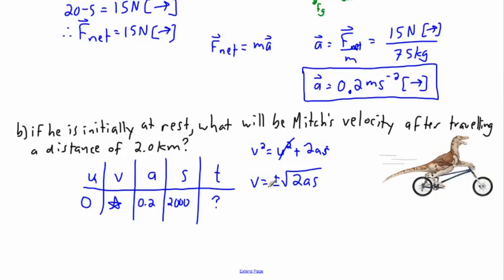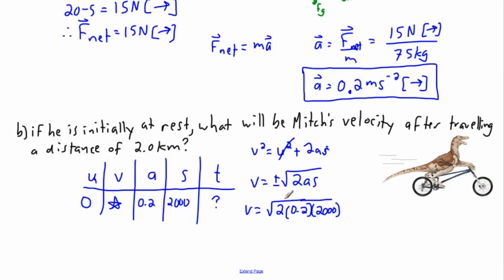I'm going to drop the negative solution because I know my speed has to be in the same direction as my acceleration. Since the acceleration is to the right, which I've called positive, V is just the positive square root of 2 times 0.2 times 2,000. Working that out: 0.2 times 2,000 is 200, and 200 times 2 is 400.